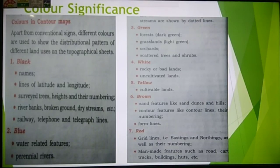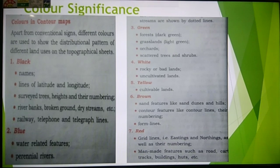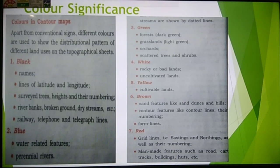Blue color is used to show water-related features and perennial rivers. Green color is used by the topo sheet for forest, grassland, light green orchard, and scattered trees and shrubs. There could be a thorny forest, vine, or palm trees — all these things are generally shown with green color.